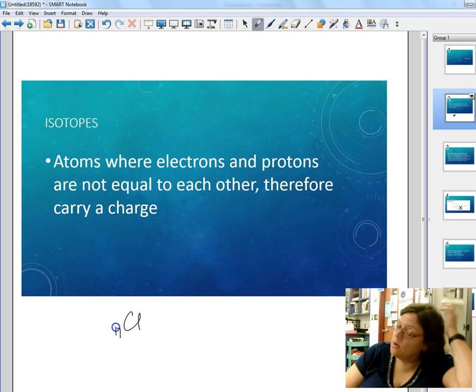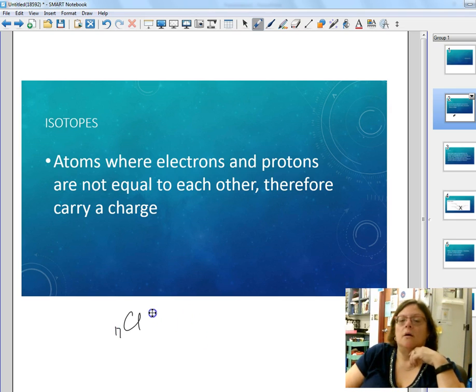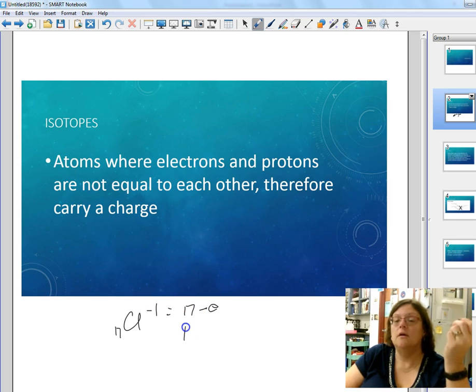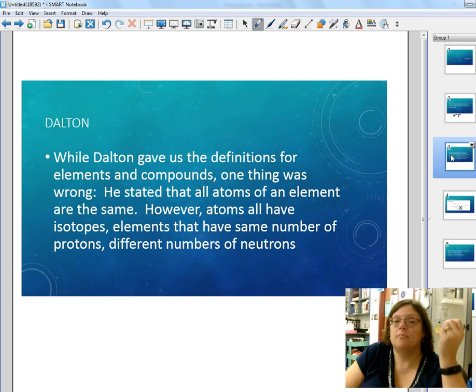Conversely, chlorine has 17 protons and it tends to have a negative one charge. So the charge is equal to protons minus electrons. 17 minus how many electrons will give you negative one? And that would be 18.